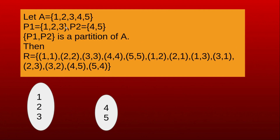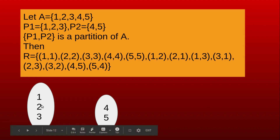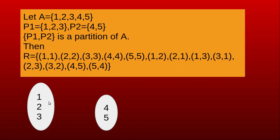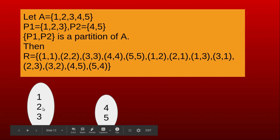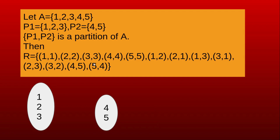When partitions of a set A are given, we can find the corresponding equivalence relation. For example, if the partitions are P1 = {1, 2, 3} and P2 = {4, 5}, we construct R by including reflexive pairs (1,1), (2,2), (3,3), (4,4), (5,5), and all pairs between elements within the same partition: (1,2), (2,1), (1,3), (3,1), (2,3), (3,2) from P1, and (4,5), (5,4) from P2. These are all the elements of the equivalence relation R.